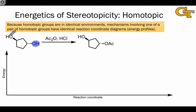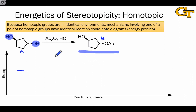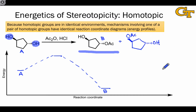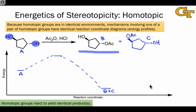Homotopic groups, such as the two hydroxyls in the molecules shown here, are in identical environments. This means that they react to give a single molecule. There's absolutely no difference energetically between either of these hydroxyl groups reacting. If we call the starting material A and the product B, there's only one possible reaction pathway leading from reactants to products. Reaction of the other hydroxyl group generates the same molecule B exactly, so there's absolutely no difference between the reaction pathways. We can use either hydroxyl group without any fear of generating a different product.